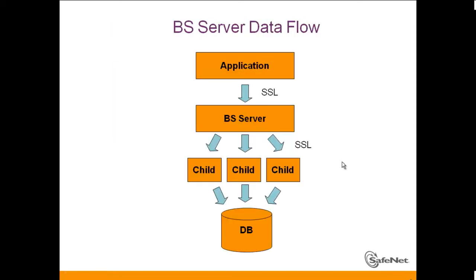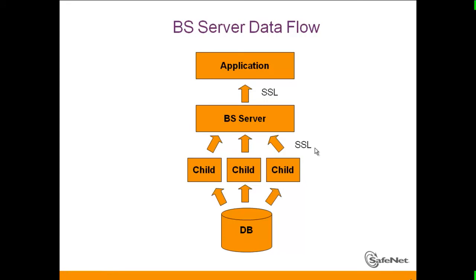Now let's look at the data flow from an application — for instance, the Business Studio application — to the Business Studio server. There is SSL secure communication between them. The Business Studio server creates child processes to handle the tasks required, and these children interact with the database. This SSL secure communication is also used in the other direction, so the information is secured.